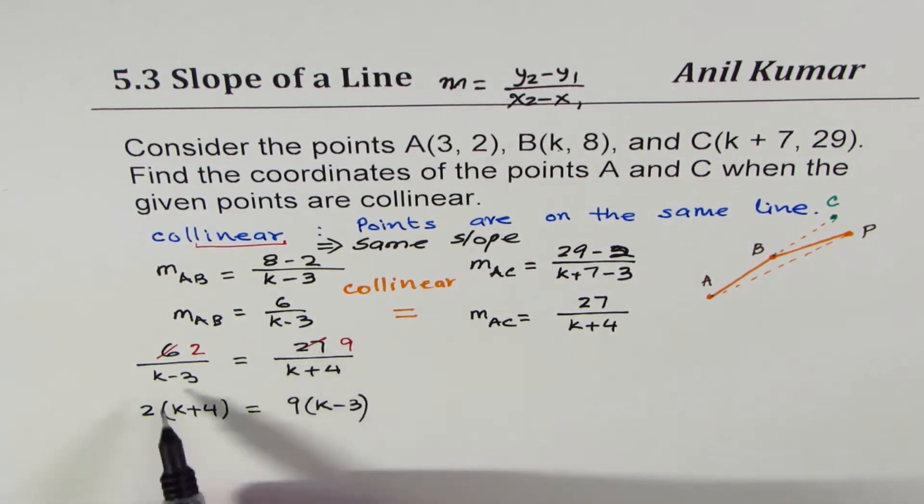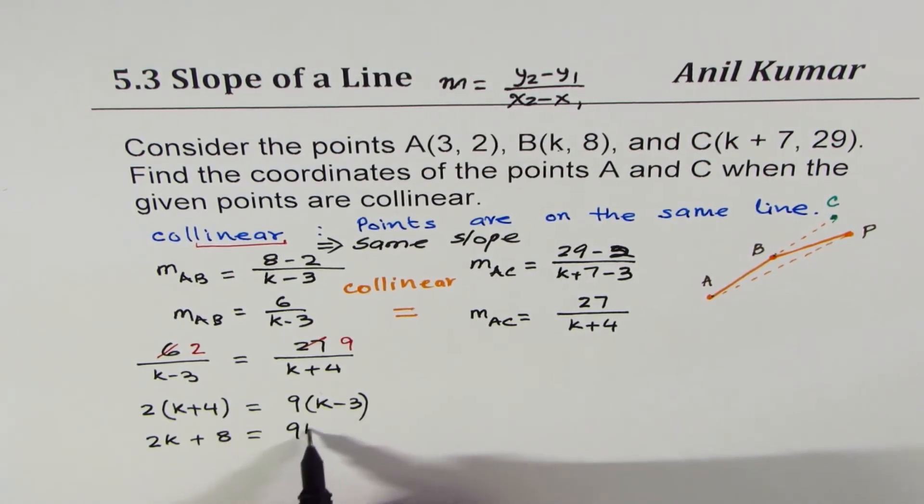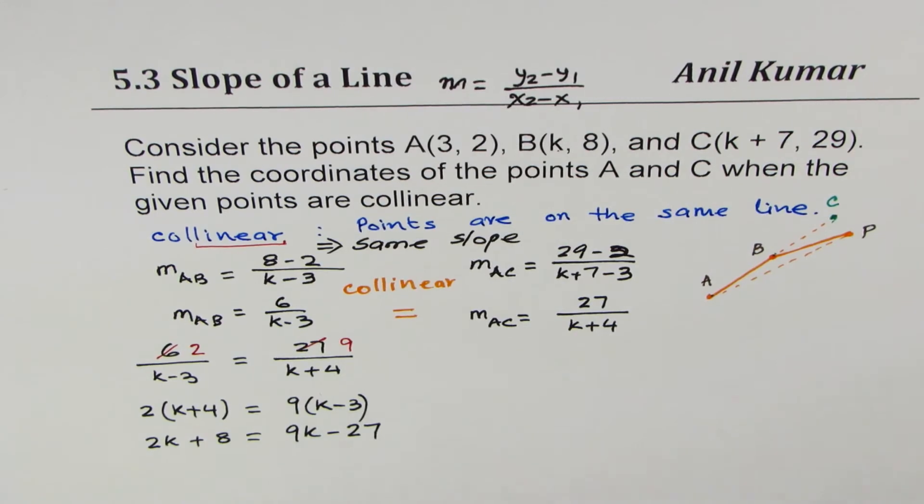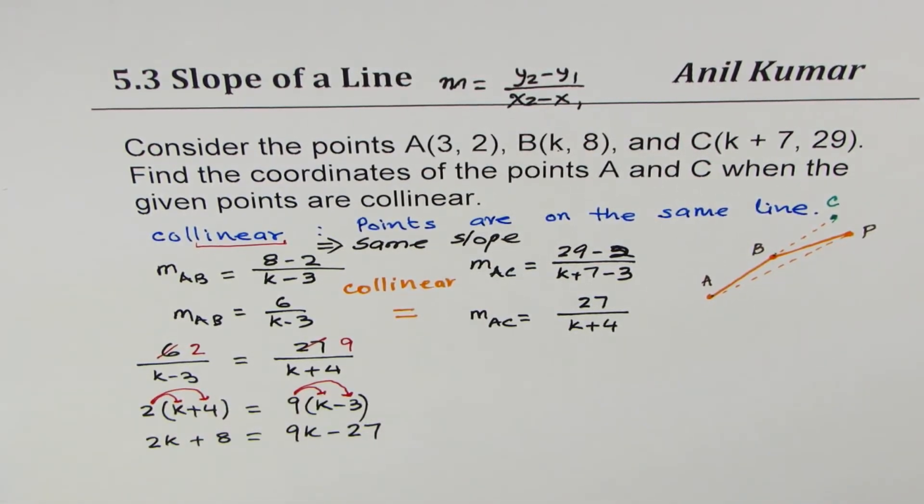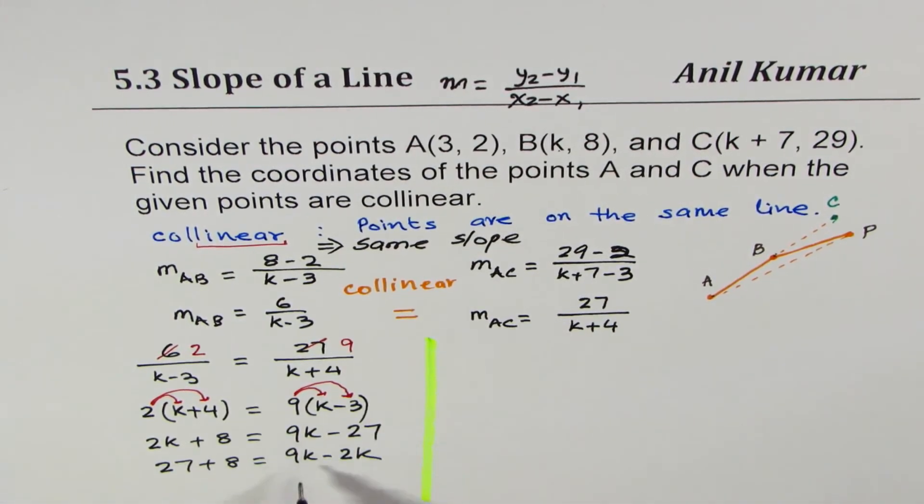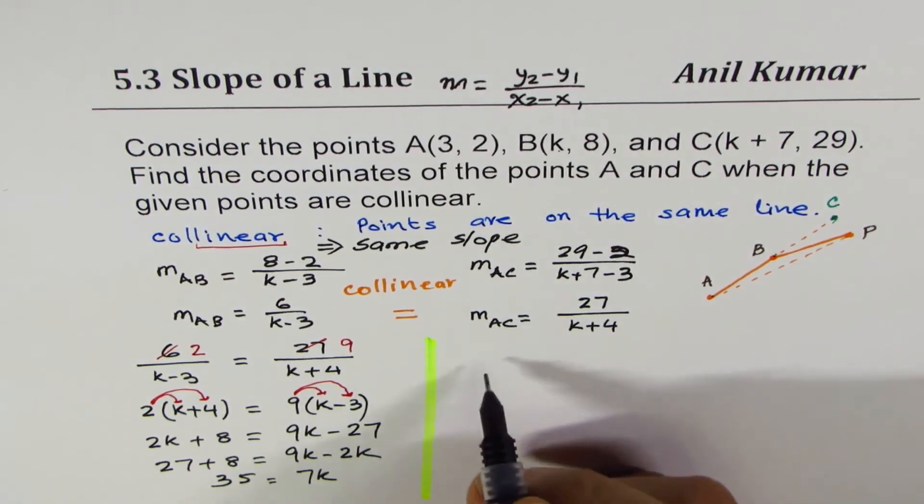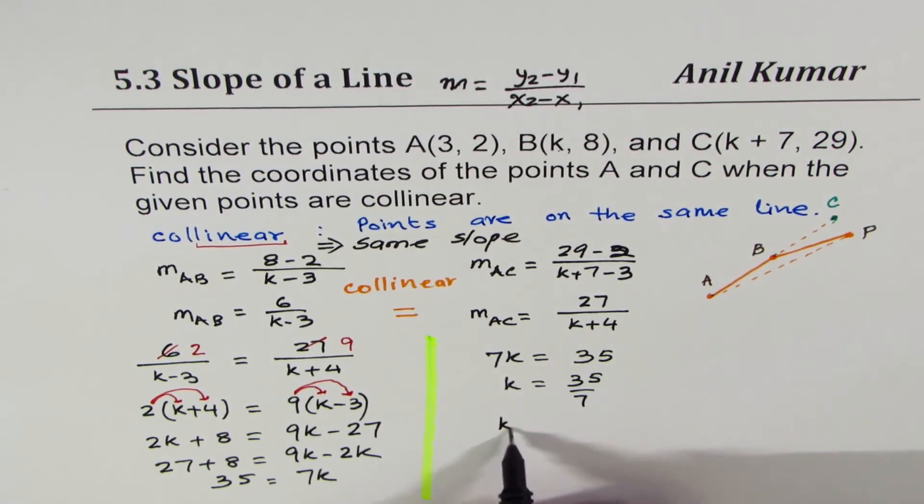Even if you skip this step, you'll get the same values. We are using calculators, so no problems. We get 2K plus 8 equals to 9K minus 27. At this stage, I have applied distributive property. You have to multiply both the terms over the term outside. That is the distributive property which you have learned. To solve for K, we should bring K's together and the constants together. Bringing 27 to the left makes it positive 27 plus 8 equals to 9K minus 2K. 9K minus 2K is 7K and 27 plus 8 is 35. We have 7K equals to 35 or K equals to 35 divided by 7. We get K equals to 5.